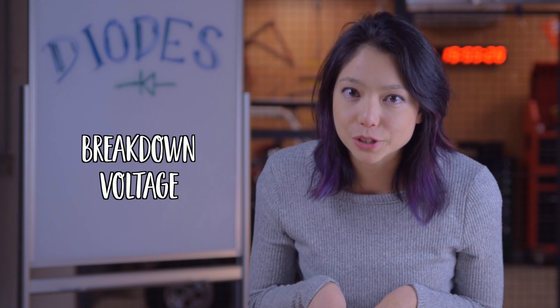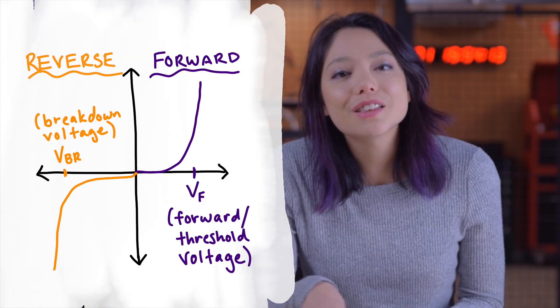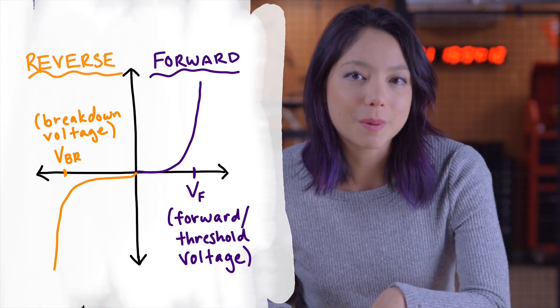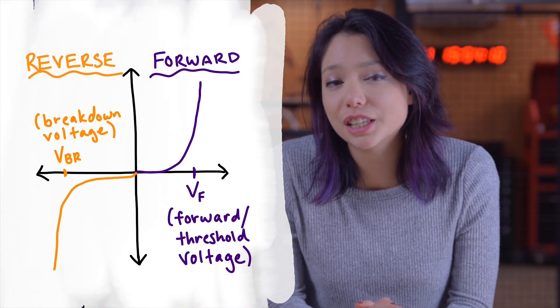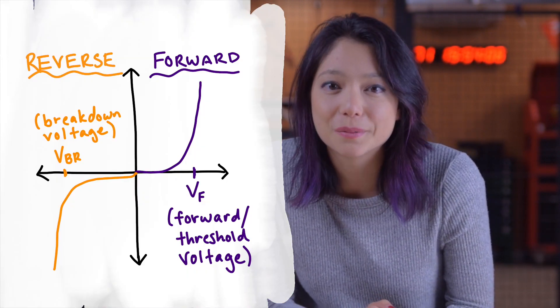And the voltage that causes that to happen is called the breakdown voltage. Now, some diodes can survive reaching breakdown voltage, but most of them will not. So all this forward and reverse bias stuff can be graphed pretty easily as a relationship between current and voltage.